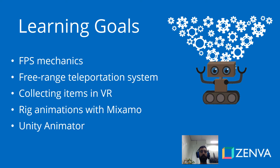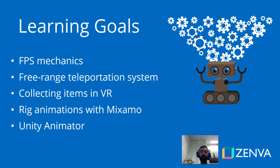We're also going to cover how to create rig animations using Mixamo, an Adobe tool that is at least free at the time of this recording. That is how we can have these zombies running or falling with a certain animation. And we'll be using the Unity animator component to set different states, different transitions, and see how we can go from one to the other.